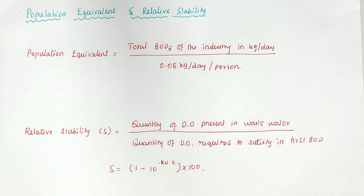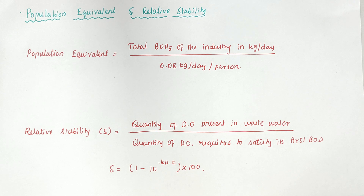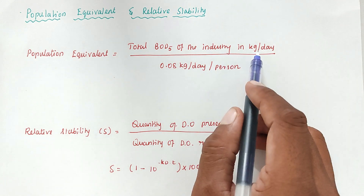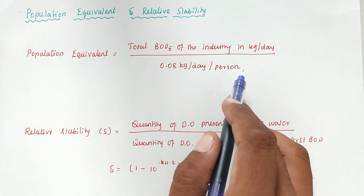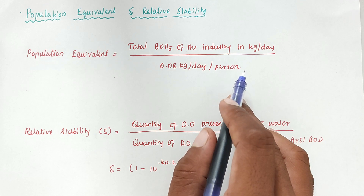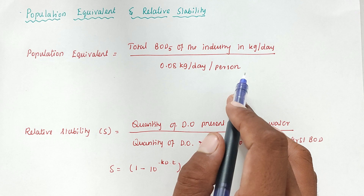Population equivalent is most important. It indicates the strength of industrial wastewater for estimating the treatment required for municipal wastewater treatment — how much treatment is required for industrial wastewater. It can be found out by the total BOD of the industry in kg divided by 0.08 kg per day per person, which is the standard average BOD5 of domestic sewage.